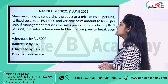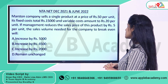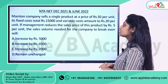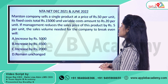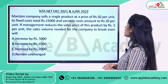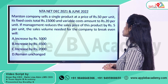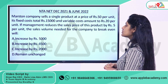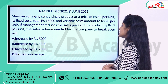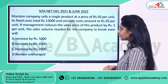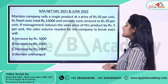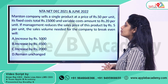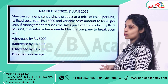Maston Company sells a single product at a price of Rs.50 per unit. Fixed cost totals Rs.15,000 and variable cost amounts to Rs.20 per unit. If management reduces the sales price of this product by Rs.5 per unit, the sales volume needed for the company to break even will...